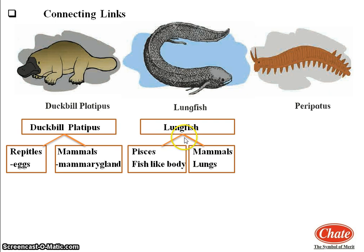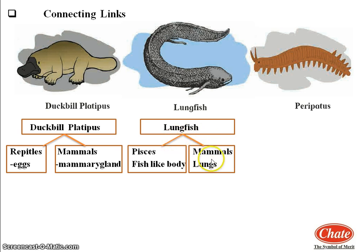Lungfish is a connecting link between Pisces and mammals because it has a fish-like body, placing it in Pisces, but it performs respiration by using lungs, which shows characters related to mammals. So lungfish is a connecting link between Pisces and mammals.